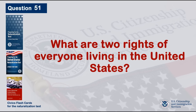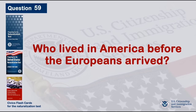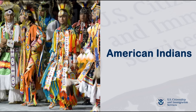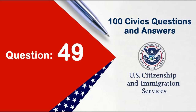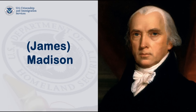What are the two rights of everyone living in the United States? Freedom of speech. Freedom of religion. The Federalist Papers supported the passage of the U.S. Constitution. Name one of the writers. James Madison.